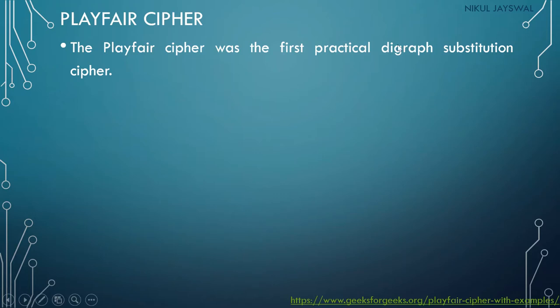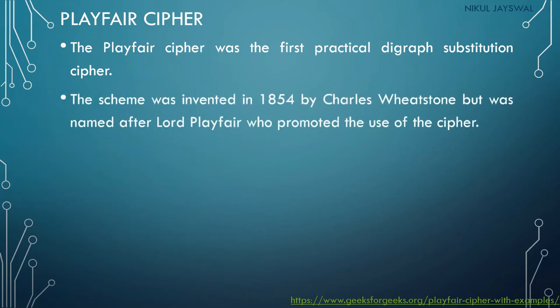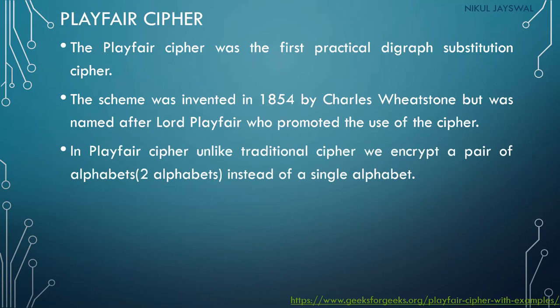The Playfair cipher was the first practical digram substitution cipher. It is still a substitution cipher — we replace one letter with another. The scheme was invented in 1854 by Charles Wheatstone but was named after Lord Playfair, who promoted its use. Unlike traditional ciphers, in Playfair cipher we encrypt a pair of alphabets instead of a single alphabet.